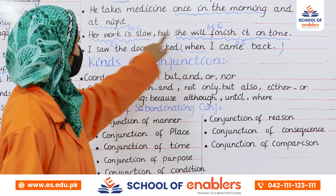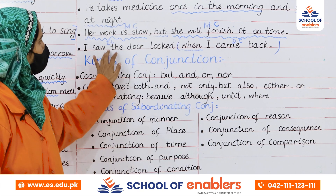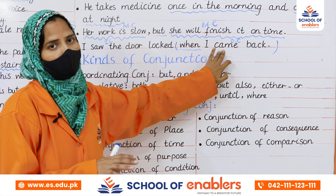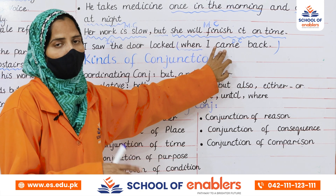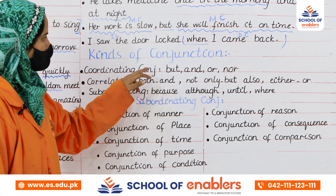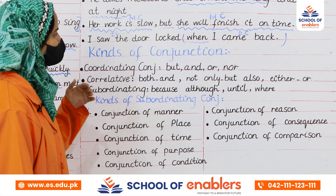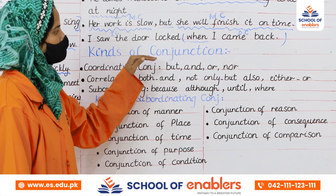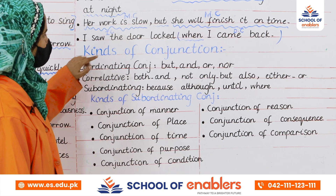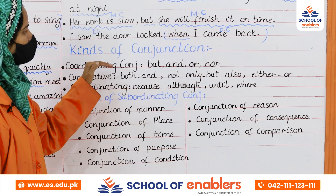That is why 'when I came back' is called a dependent clause — because it depends on the main clause. An independent clause can stand alone, but a dependent clause always needs an independent clause to give complete information. We are going to learn about different kinds of conjunctions. We are learning conjunction in detail because we are now in Grade 7.